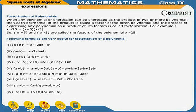Factorization of Polynomials. When any polynomial or expression can be expressed as the product of two or more polynomials, then each polynomial in the product is called a factor of the given polynomial. The process of expressing any polynomial as a product of its factors is called factorization. For example, x² − 25 can be written as (x + 5)(x − 5), so x + 5 and x − 5 are called the factors of x² − 25.